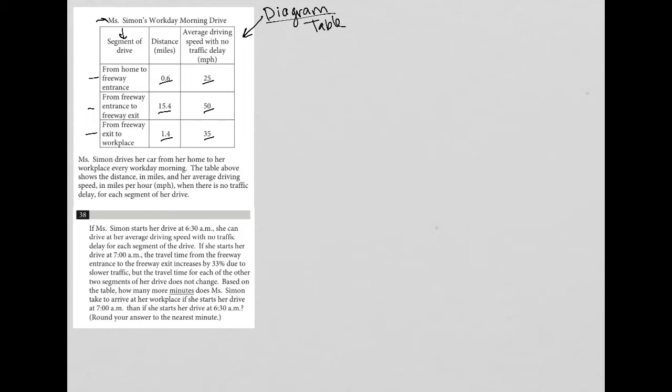Let's figure out what's going on with this question. Ms. Simon drives from home to workplace every workday morning. The table shows distance in miles and average driving speed in miles per hour with no traffic delay for each segment. Let's go to question 38.